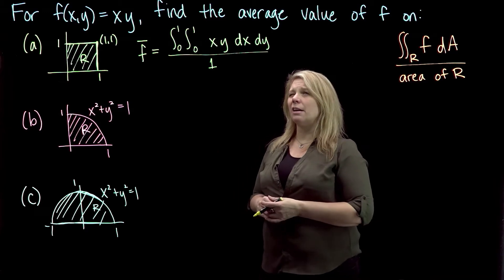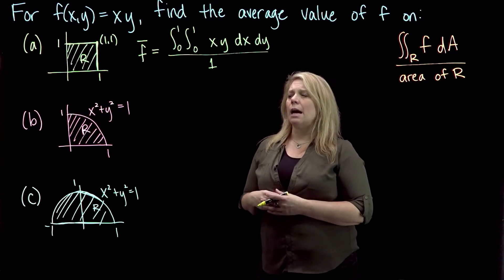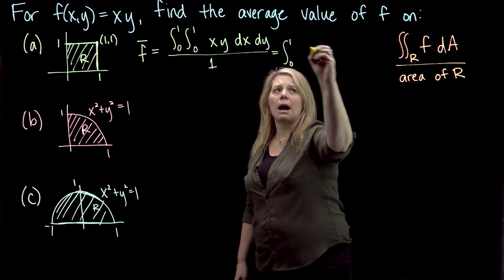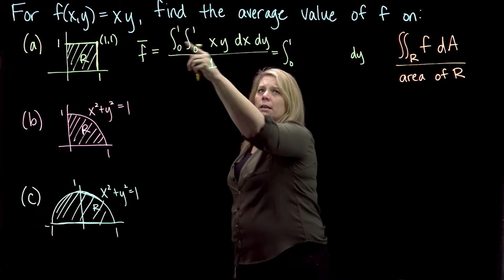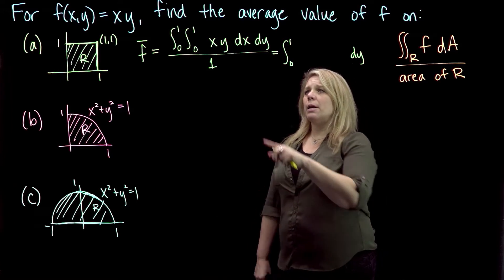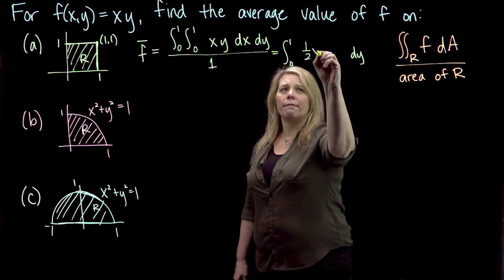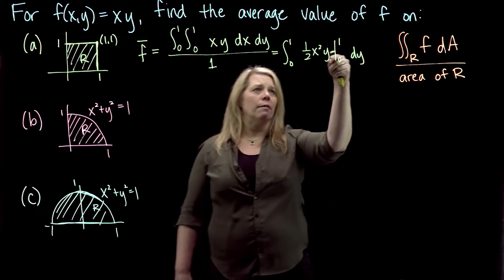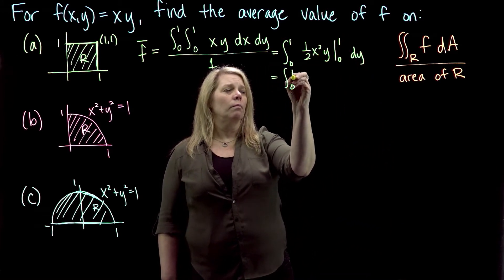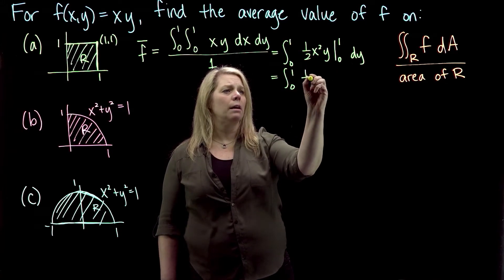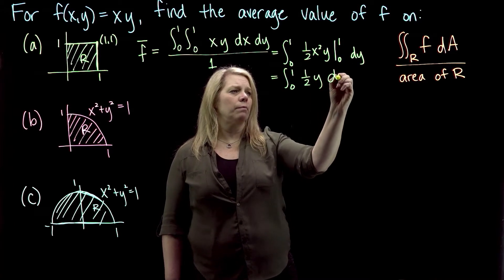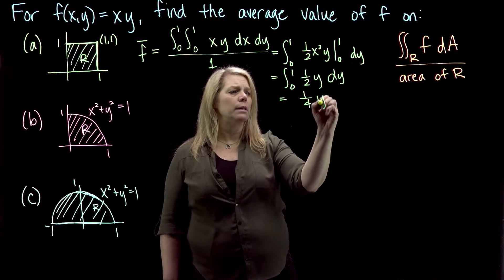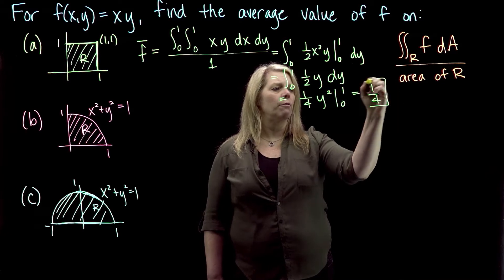This integral is pretty straightforward. I'll skip a couple of steps in the integration. For the inner integration with respect to x, I get (1/2)x²y evaluated from x=0 to x=1, which gives (1/2)y. Then integrating that with respect to y gives (1/4)y² evaluated from 0 to 1, so we get 1/4.